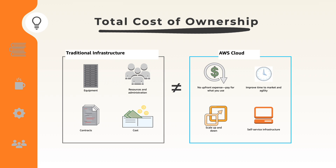Let's move on to Total Cost of Ownership. The TCO is a financial estimate to help you identify the direct and indirect cost of a system. If a customer wants to migrate their business to the cloud, you can use the TCO calculator to give a side-by-side comparison between the cost of running a system in a data center versus in AWS cloud. I highly recommend reviewing the TCO before you go to the AWS management console and build your architecture.